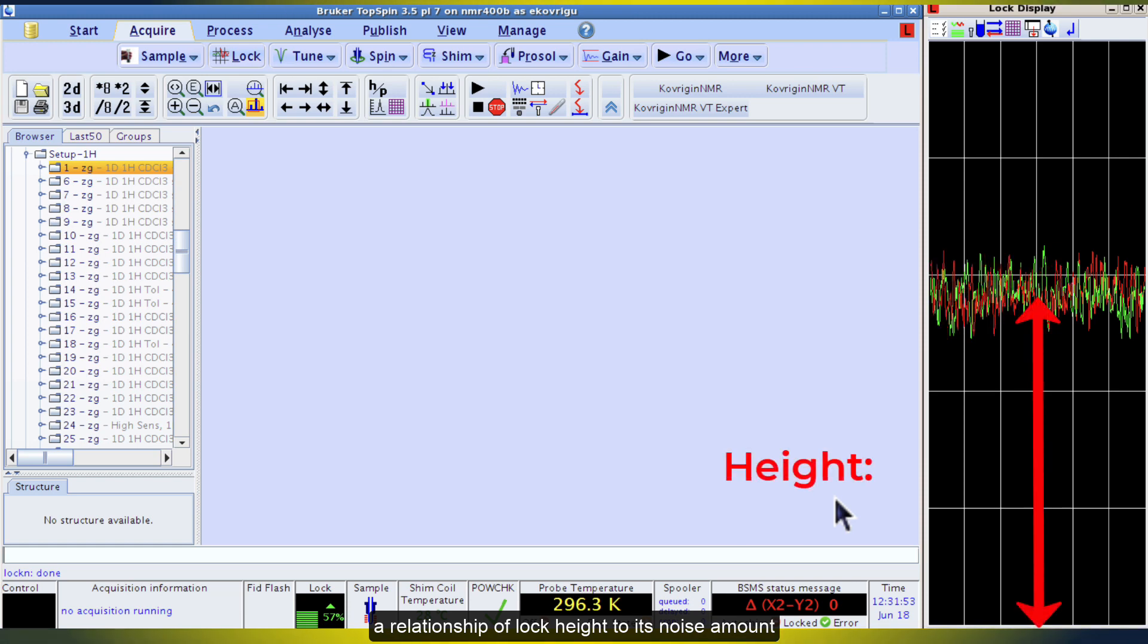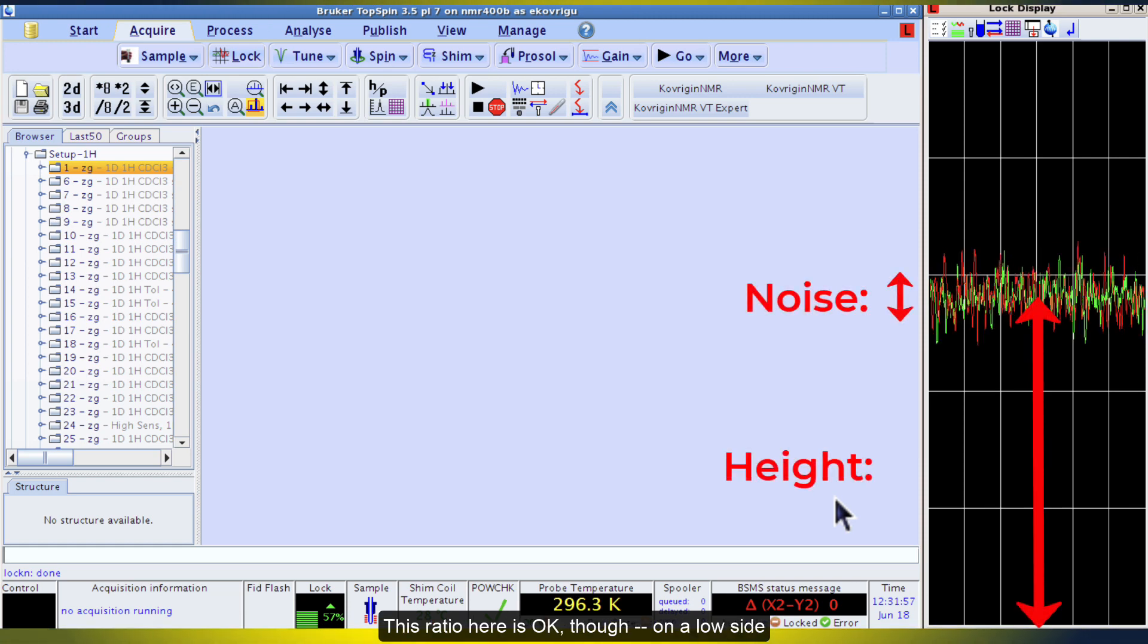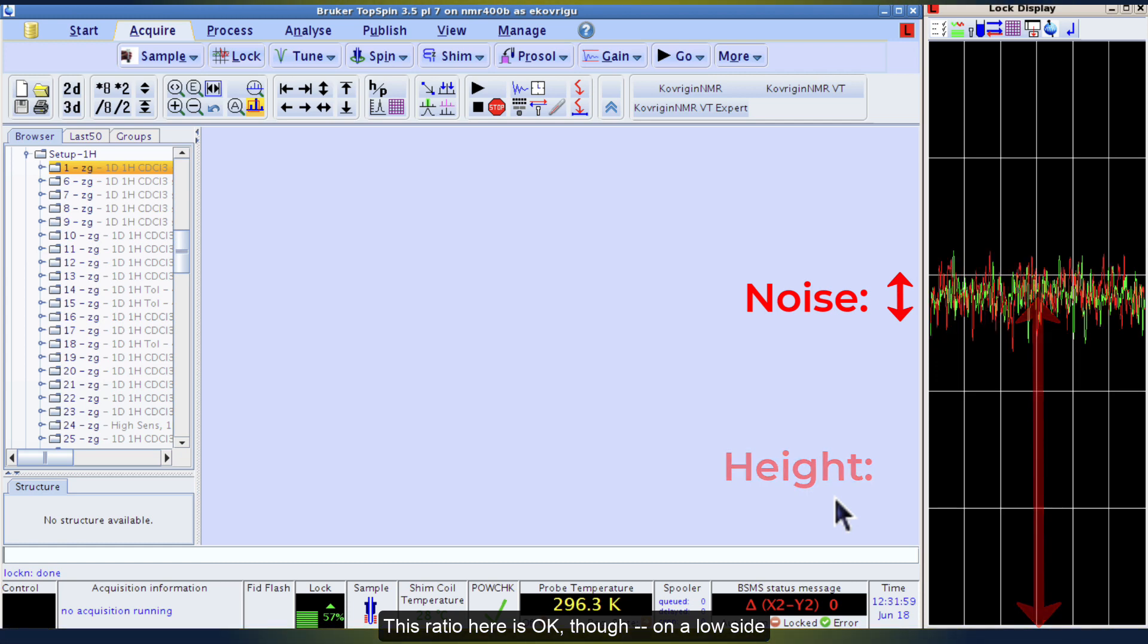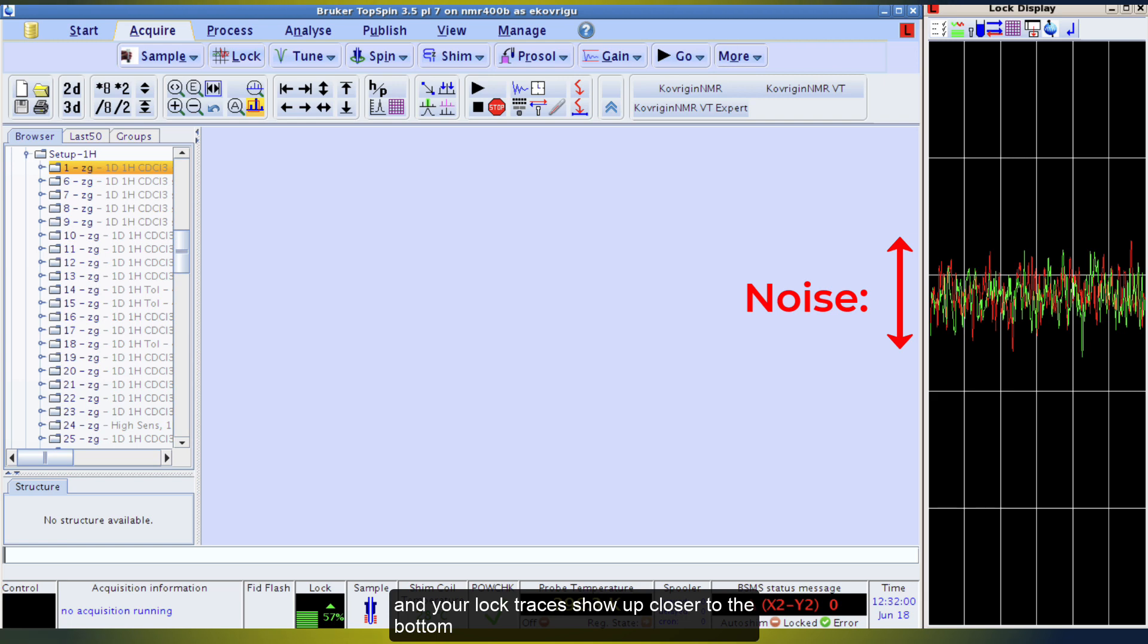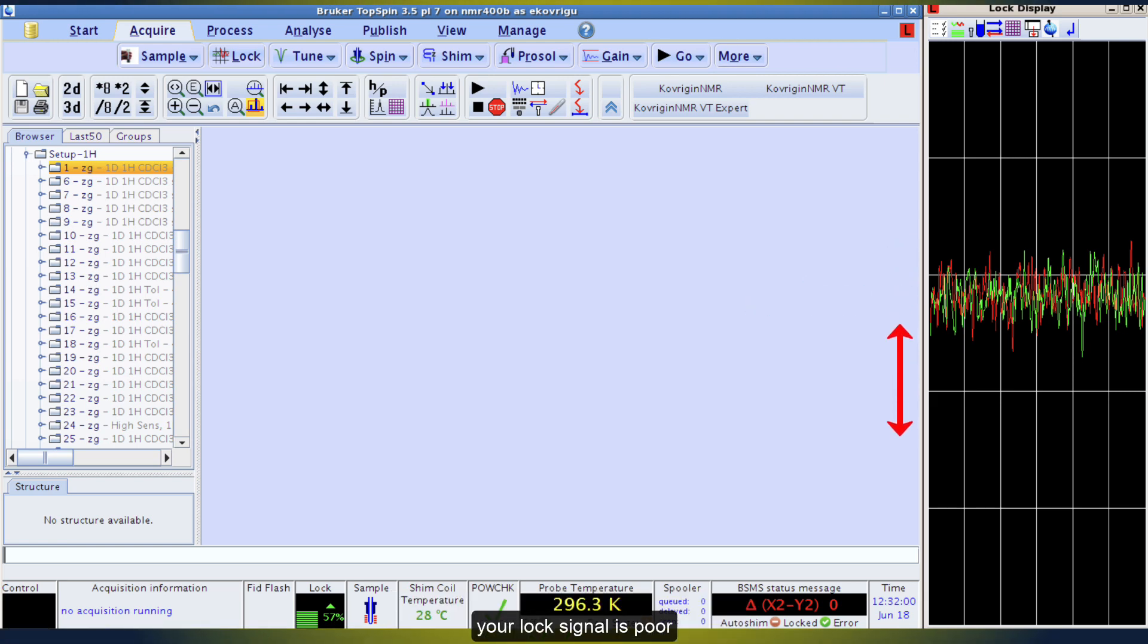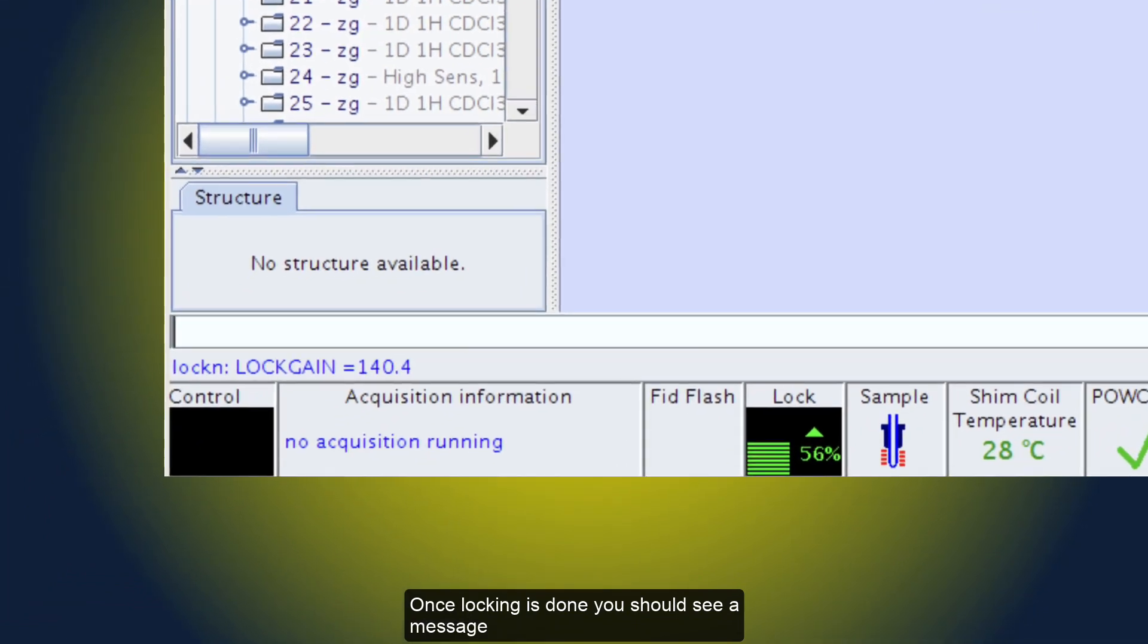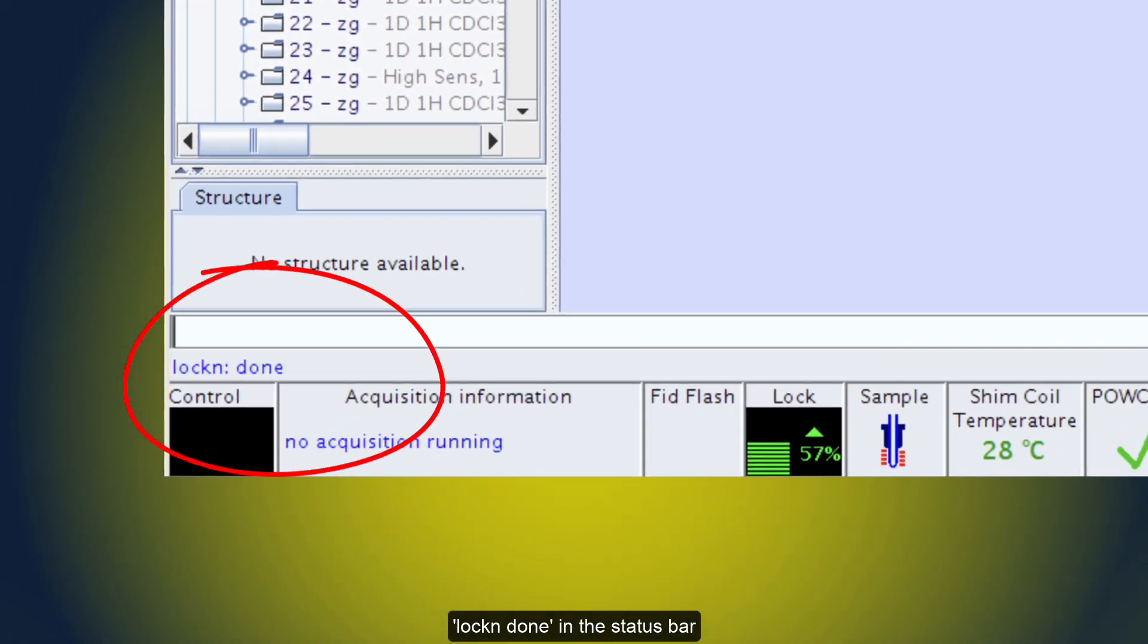Pay attention to the signal-to-noise ratio in the lock, the relationship of the lock height to its noise amount. The ratio here is OK, but on a low side. If you see more noise and your lock traces show up closer to the bottom, your lock signal is poor. Your instrument may still succeed in locking, but it will be harder to shim. Once locking is done, you should see a message lock and done in the status bar.